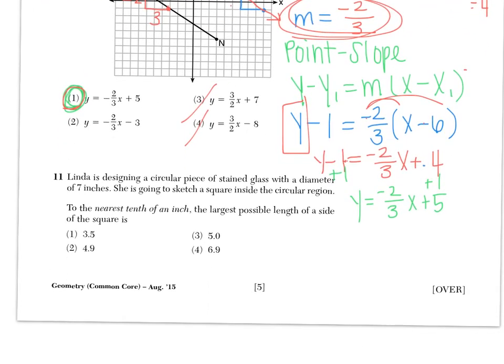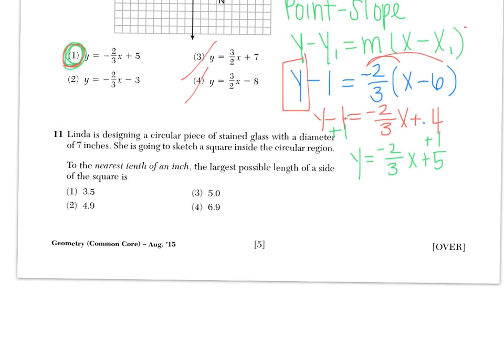Number 11 says that Linda is designing a circular piece of stained glass with a diameter of 7 inches. So I'm going to sketch a circle. Diameter of 7 inches, which of course goes all the way across through the center. She's going to sketch a square inside the circular region. So this is a little weird, she wants a square inside of here.